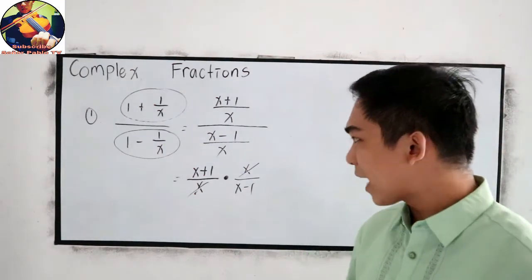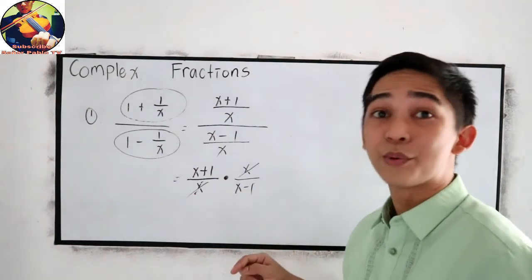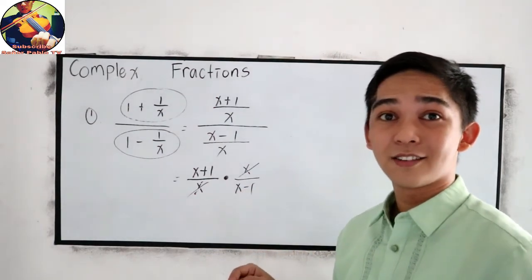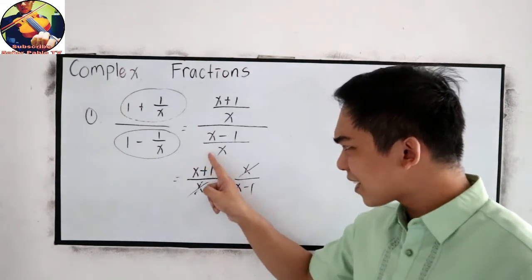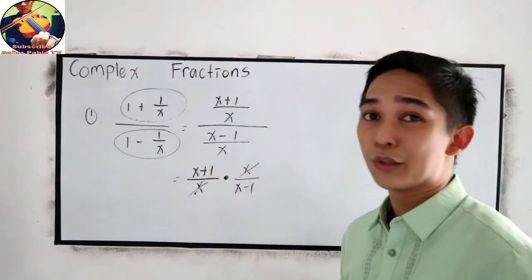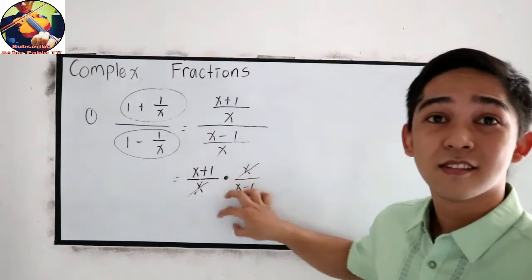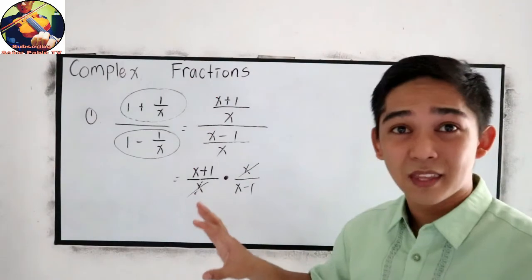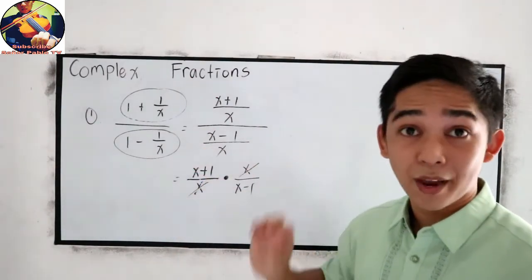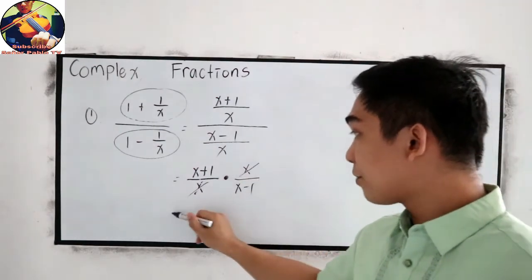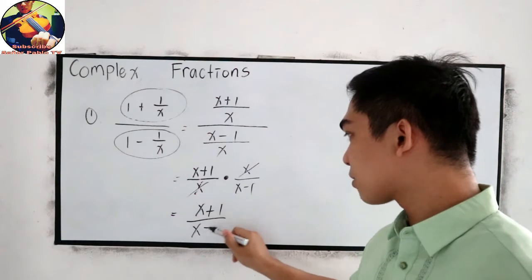Can we cancel x plus 1 and x minus 1? No, they are different. How about, can I cancel x and x? No, because this is a single term. Single term. We cannot split that. We're going to cancel. So we need to cancel the binomial to binomial. So our final answer is x plus 1 over x minus 1.